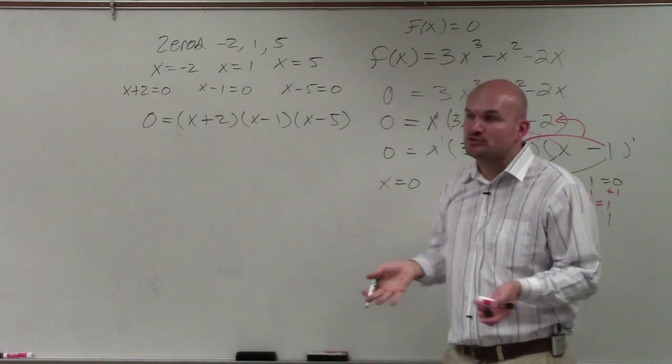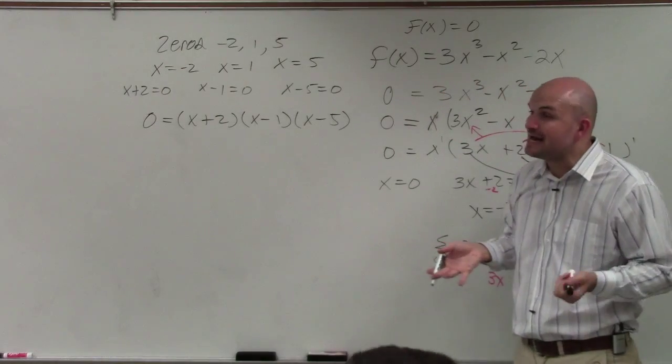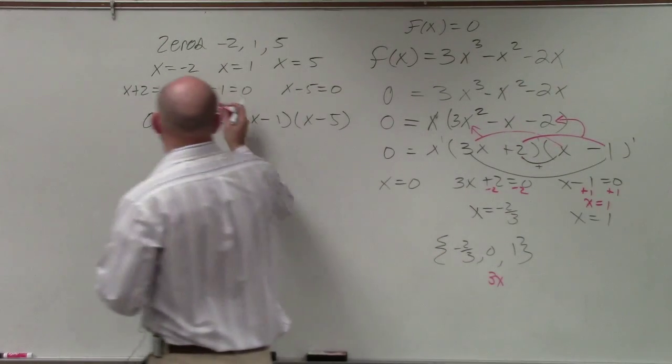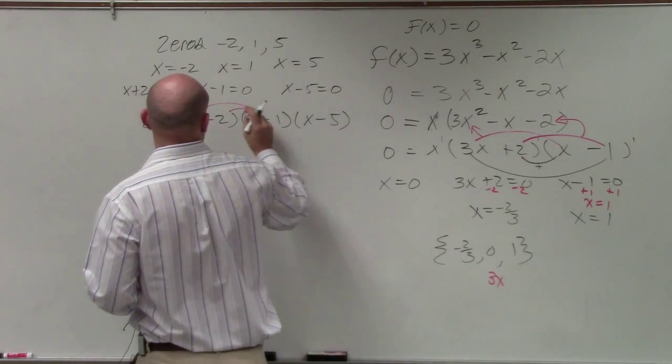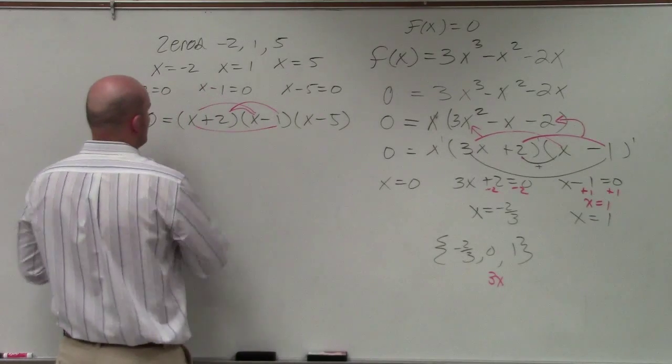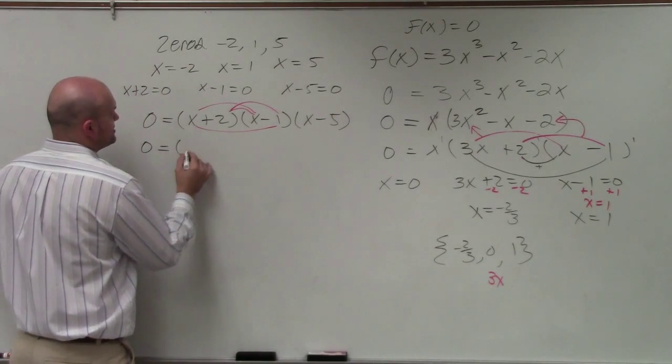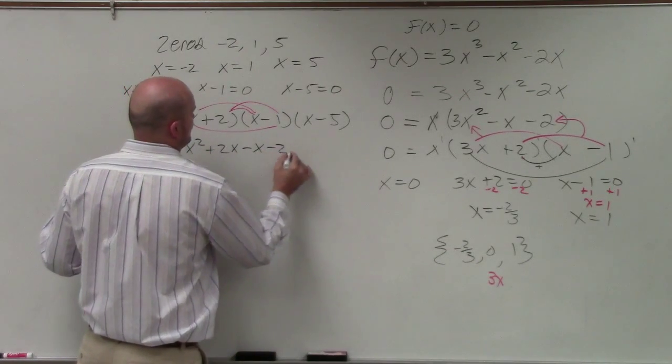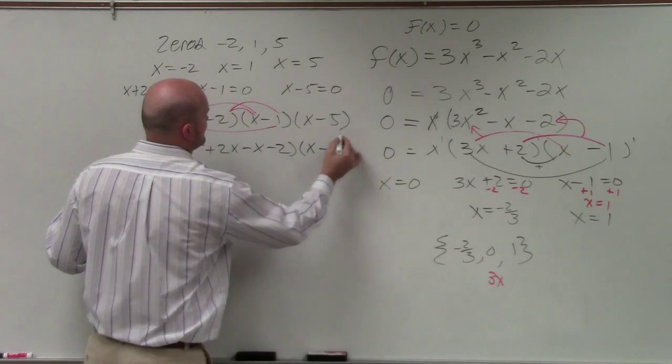Then we just multiply. Now when you're multiplying three of them at a time, I would recommend doing two at a time first, then doing the third set. So let's do FOIL for these two.